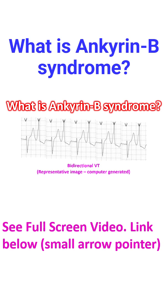It is a complex cardiac phenotype which may include bradycardia, conduction block, atrial fibrillation, QT interval prolongation, and catecholaminergic polymorphic ventricular tachycardia (CPVT). The representative image indicates bidirectional ventricular tachycardia, classical of CPVT.